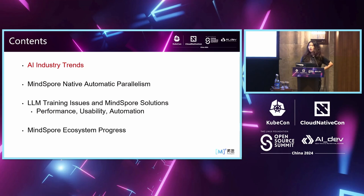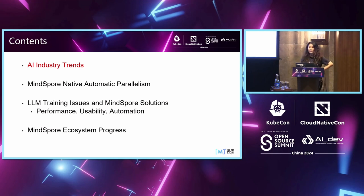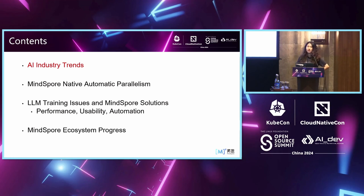Today's content will be divided into four topics. First, we'll briefly go through the evolution of artificial intelligence in industry. Then we'll go into details about MindSpore's native support for automatic parallelism, including code implementation, how it differs from other frameworks, and improvements to usability, efficiency, and performance of large language model training. We'll also discuss detailed issues during LLM training and our solutions, and finally a report on the MindSpore ecosystem progress.